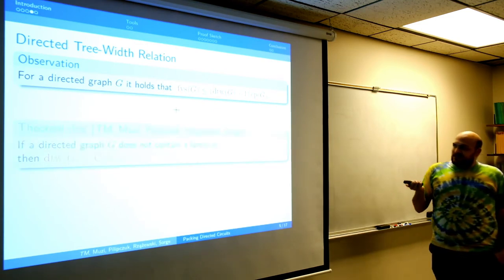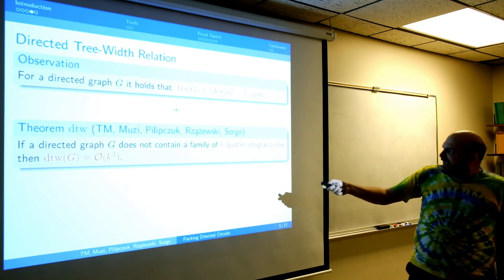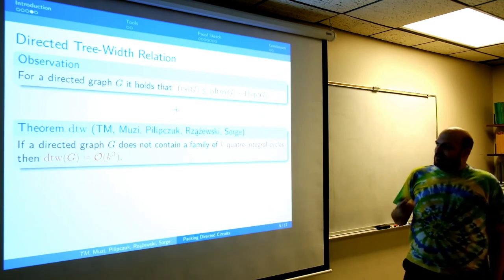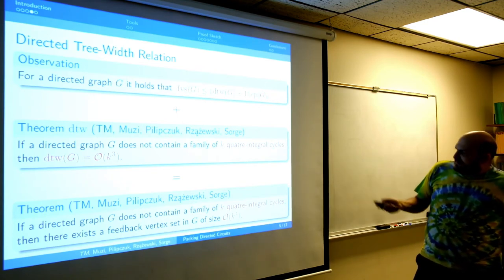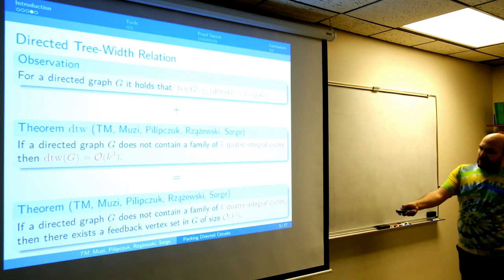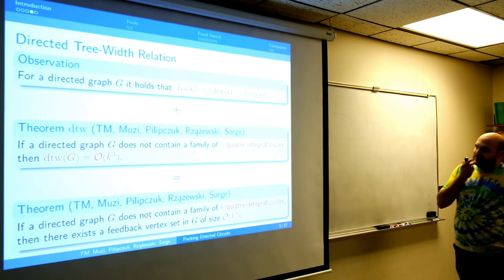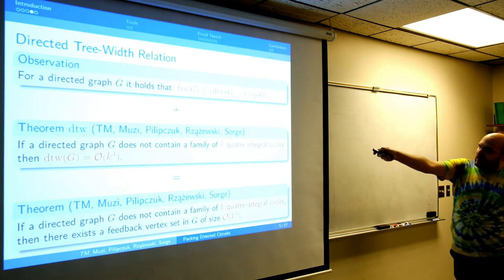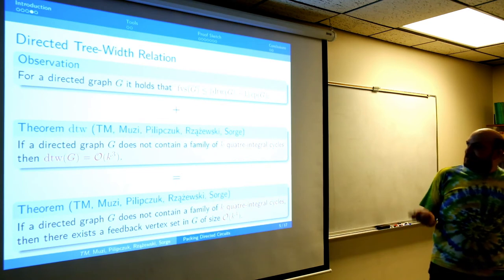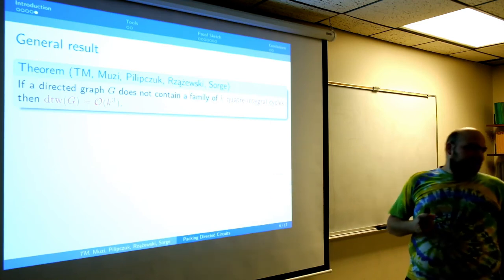No k quarter-integral cycles means the feedback vertex set is bounded by O(k to the fourth), because cycle packing is at most k, so it's k cubed times k. From now on, let me use directed treewidth instead of feedback vertex set. Our aim is to show that no k quarter-integral cycles implies directed treewidth bounded by k cubed.